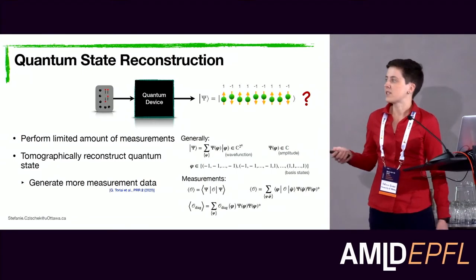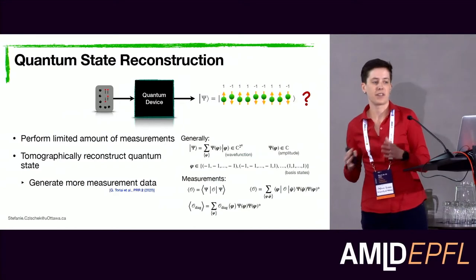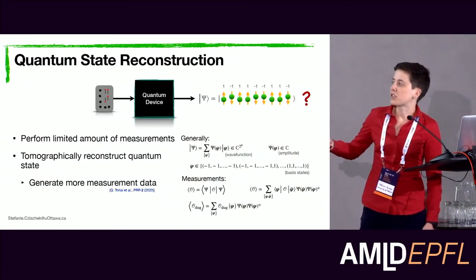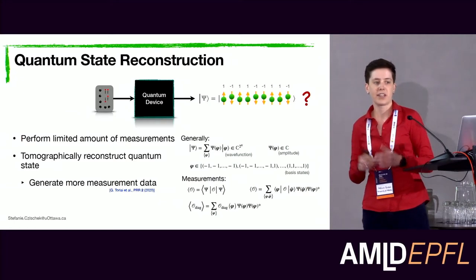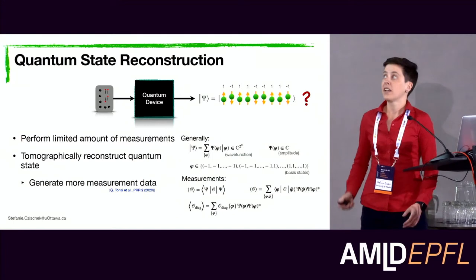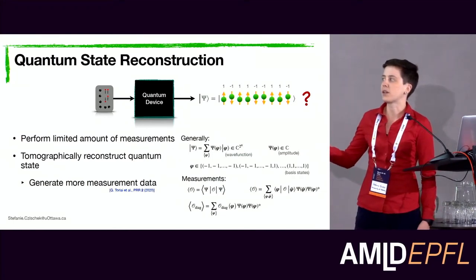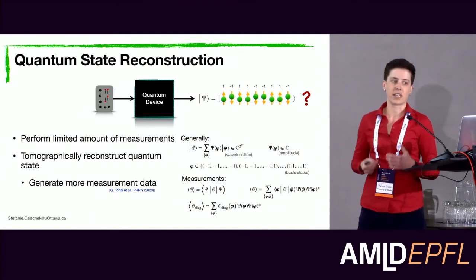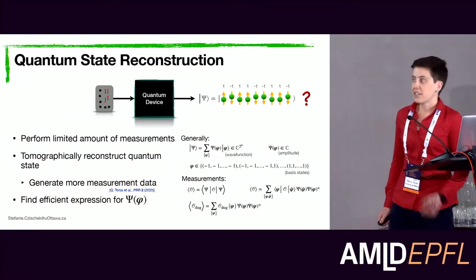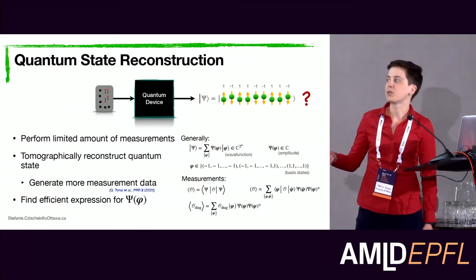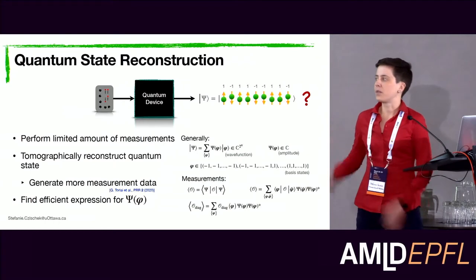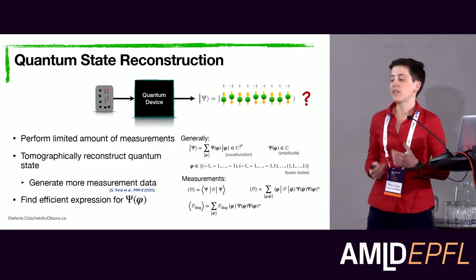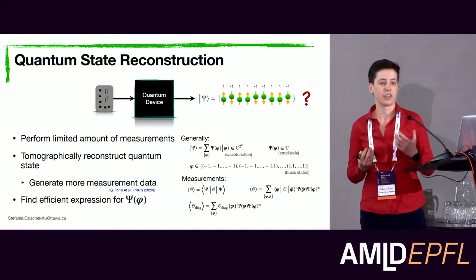For the special case of diagonal observables — those with entries only on the diagonal — this simplifies significantly: we only need to sum over basis states once, weighting each term by the squared wave function amplitude. Squaring the complex-valued amplitude gives a real non-negative number, and if we normalize our wave functions, we can interpret this squared amplitude as a probability distribution underlying the measurement outcomes of our diagonal observable.